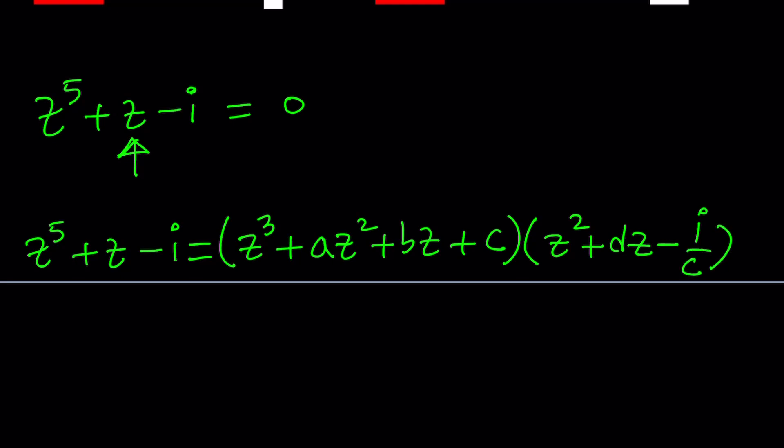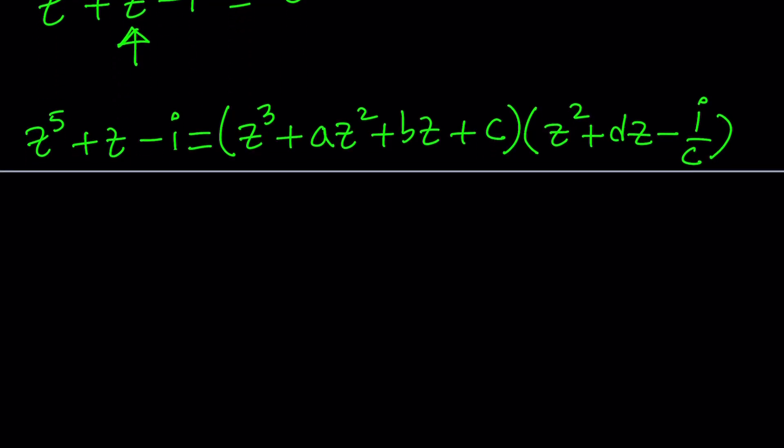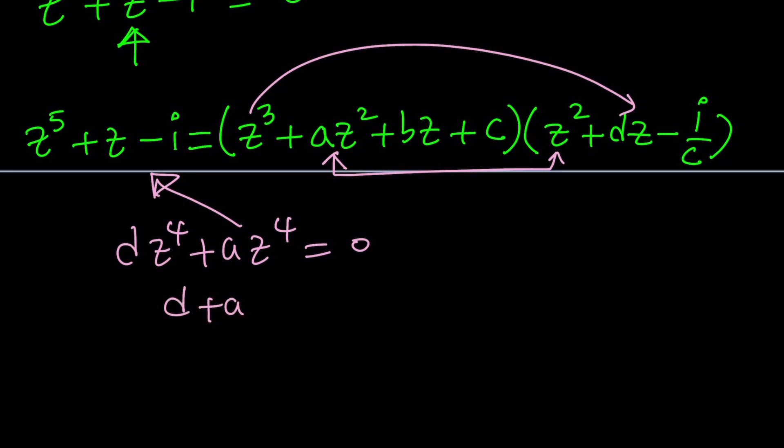We could even reduce this problem a little bit more, such as looking at the coefficient of Az to the fourth power. Where does z to the fourth power come from? It comes from the product of z cubed and z, and z squared and z squared. That's the only way you can get z to the fourth from here. And notice that when I multiply the z to the fourth powers here, for example z cubed and Dz, that gives me Dz to the fourth. And then when I multiply these two things, that gives me Az to the fourth. In other words, this needs to be zero because there is no z to the fourth in the original equation. But guess what? That means D plus A needs to be zero, or we can write D as negative A.